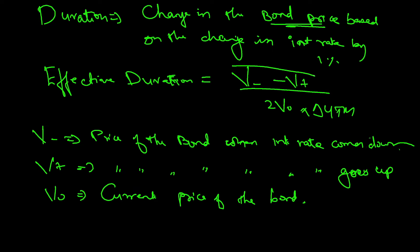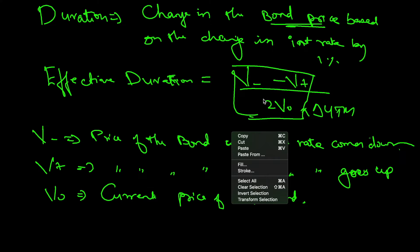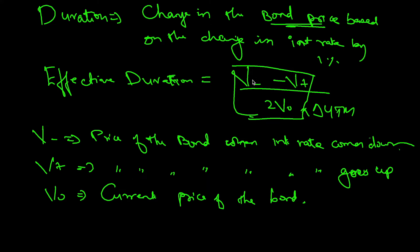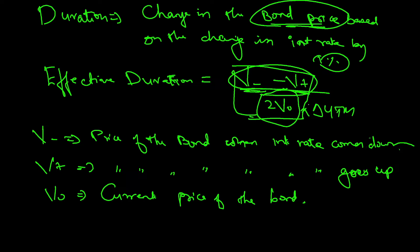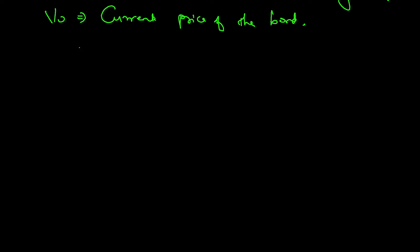This formula can be broken into two parts. The numerator gives us the average change — V-minus minus V-plus shows how much the price is changing, and dividing by 2 times V-zero takes the average. The intention is to find the overall change based on a one percentage change in interest rates, so we divide further by the change asked in the question to normalize for one percentage.